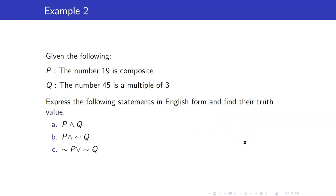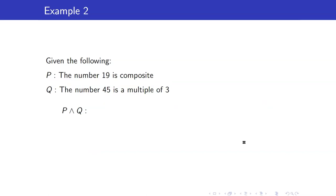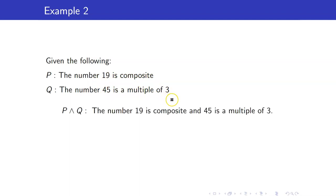Suppose that P is the statement 'the number 19 is composite' and Q is the statement 'the number 45 is a multiple of 3.' Let us express the following statements in English form and find their truth values. For P and Q: 'The number 19 is composite and the number 45 is a multiple of 3.' 19 is a prime number, so P is false; 45 is a multiple of 3, so Q is true. Therefore P and Q is false.